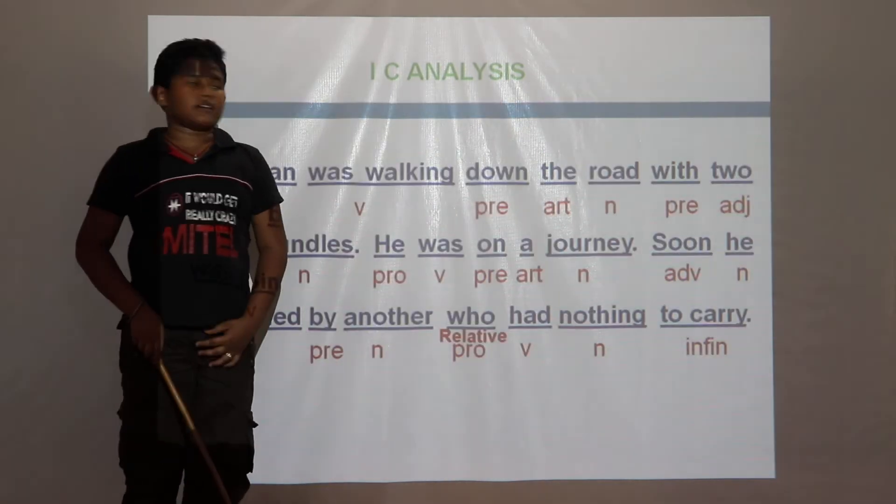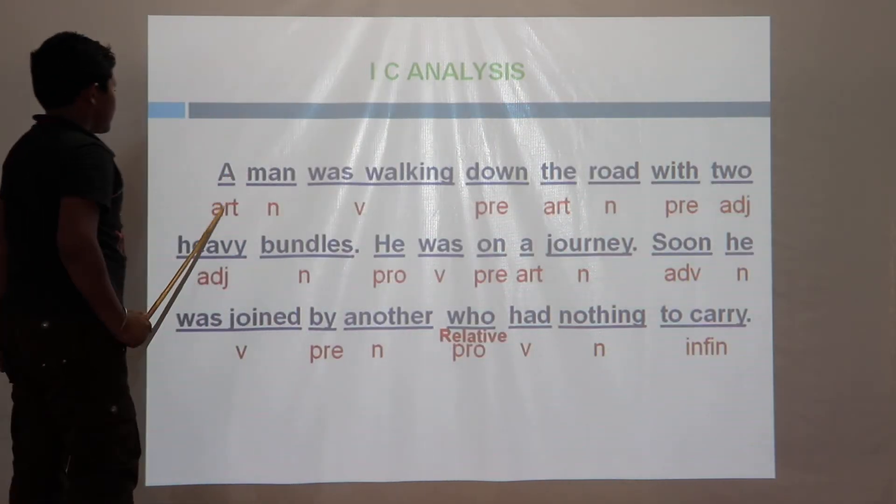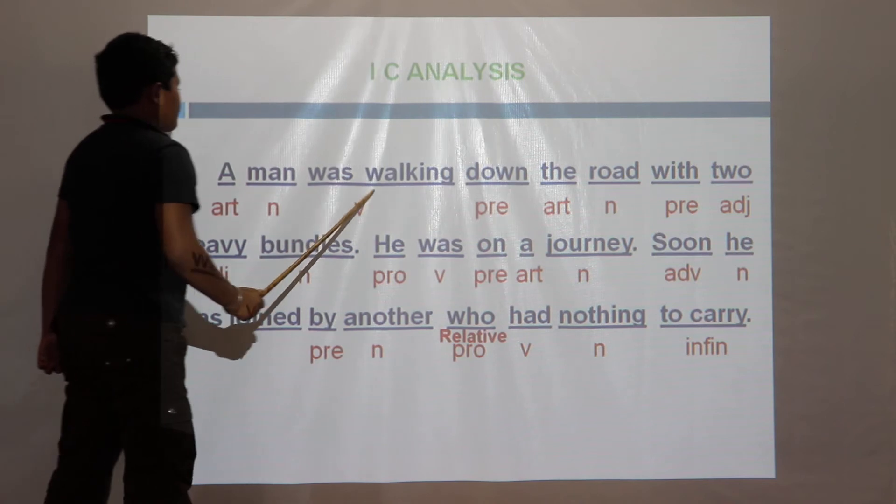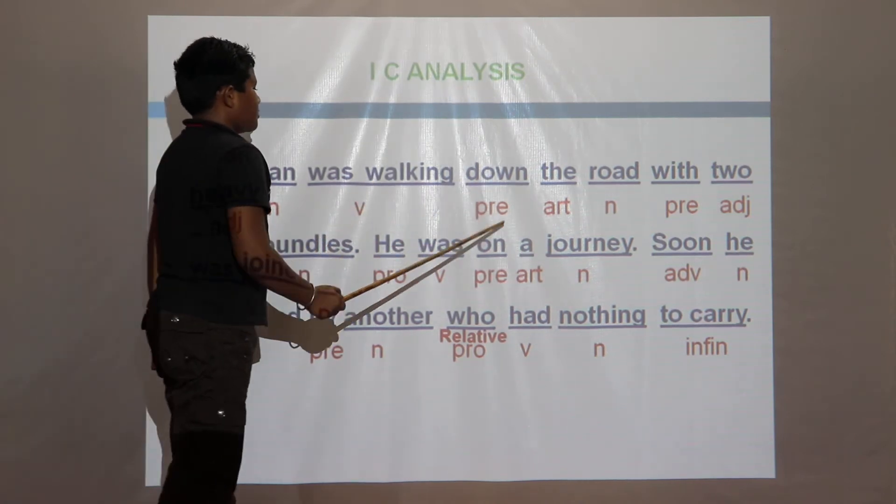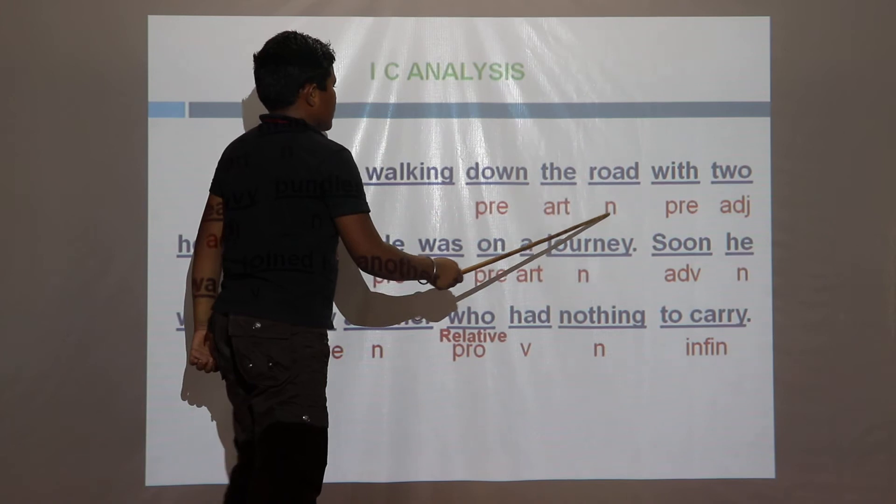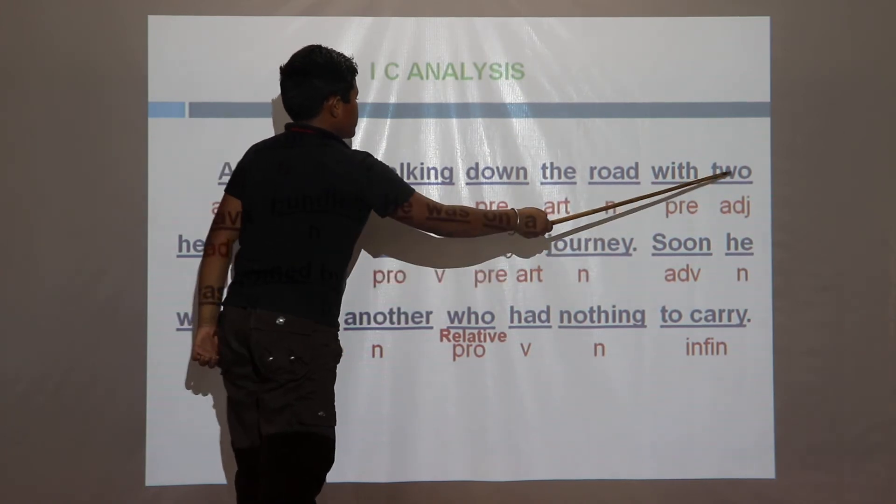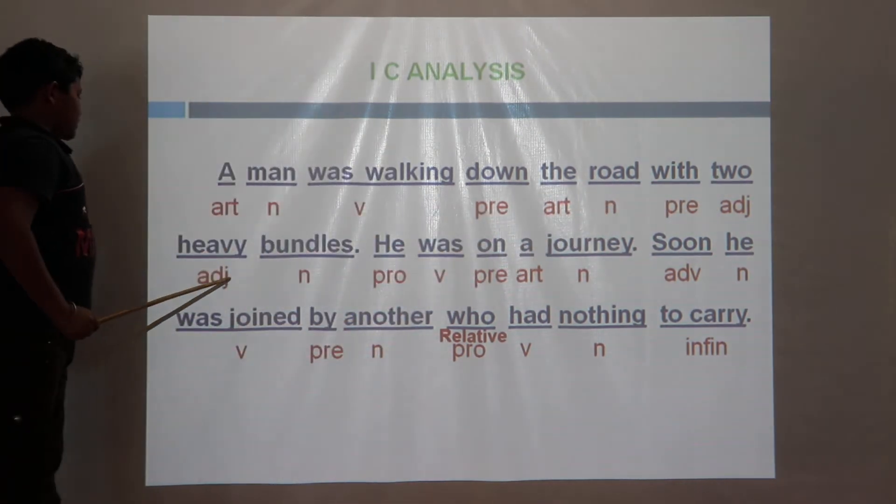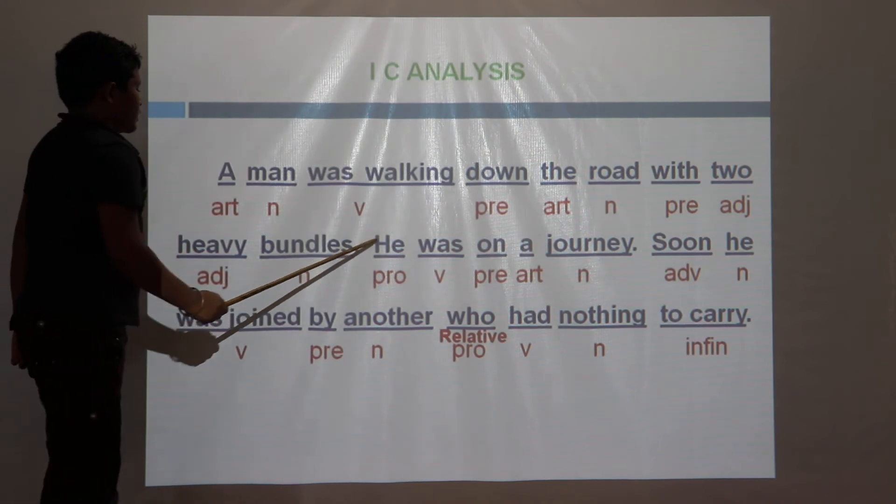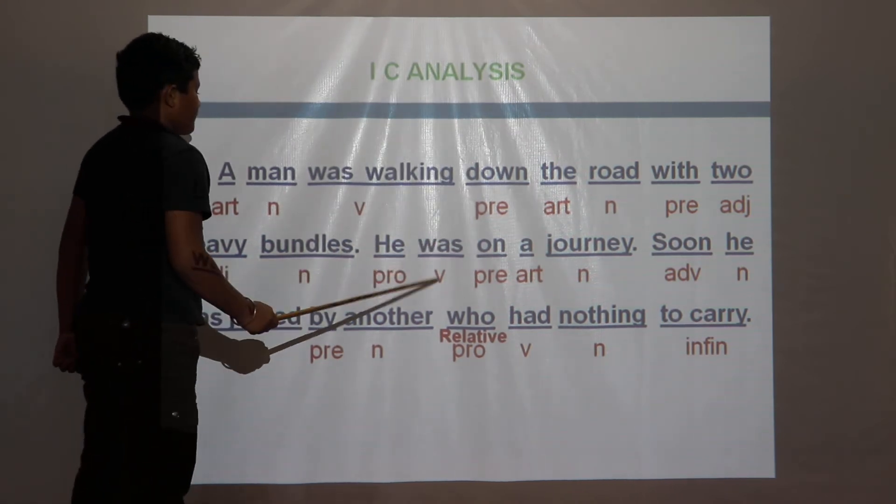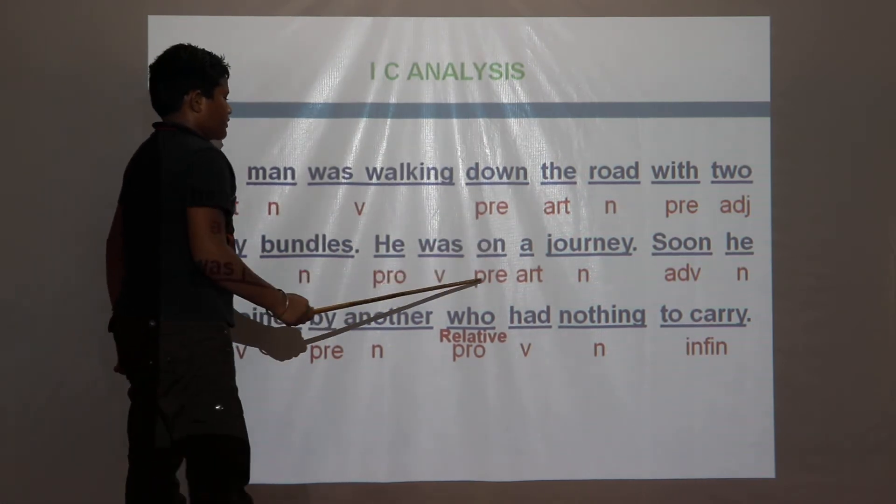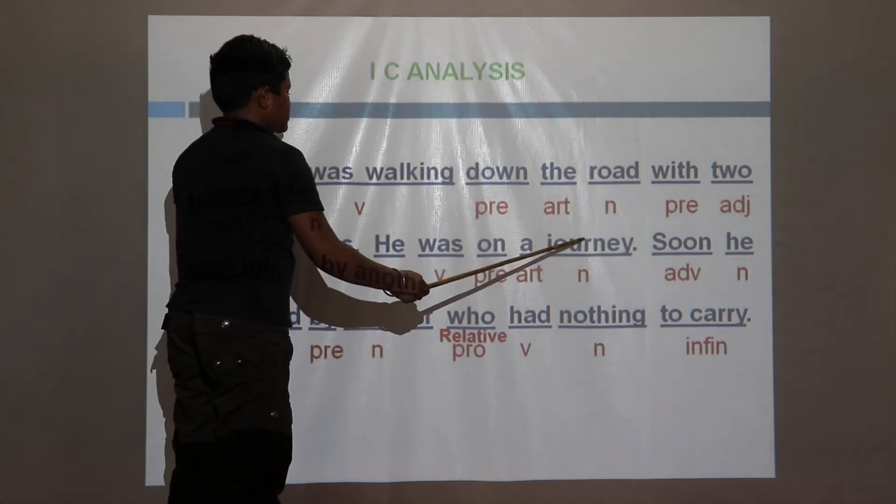I am checking my answer. A - article, man - noun, was walking - verb, down - preposition. The - article, road - noun, with - preposition. Two - adjective, heavy - adjective, bundles - noun. He - pronoun, was - verb, on - preposition. A - article, journey - noun.